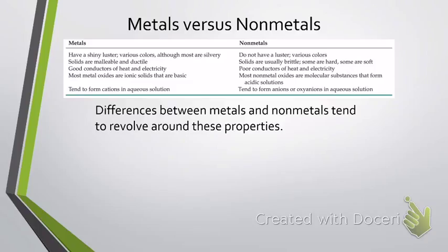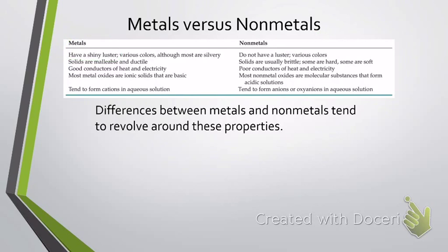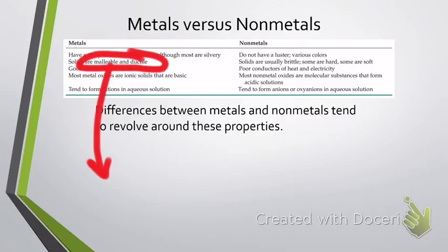Metals and nonmetals have very distinct properties, and the differences between them revolve around these properties. For example, metals are often shiny — they can be various colors, but a lot of them are silver — whereas nonmetals lack this luster and are usually dull looking. Metals, if they're solids, are malleable and ductile: malleable means you can hammer them into different shapes, and ductile means you can stretch them into thin wires. Whereas nonmetals are usually brittle — sometimes hard, sometimes soft, but they tend to be brittle.